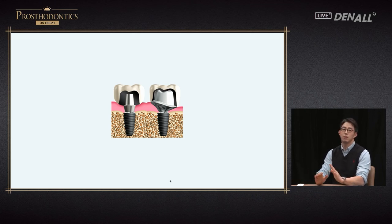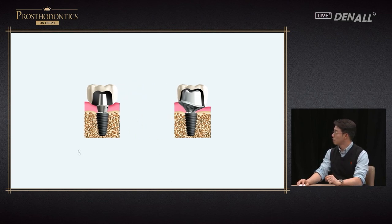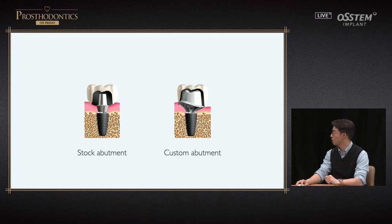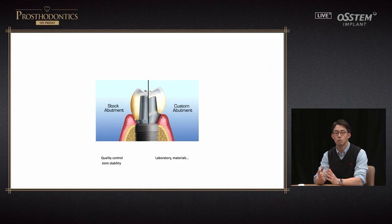You cannot use stock abutment for all cases. If the implant has been placed in a slightly angled way, you can use custom abutment to adjust the inclination. Or if you use stock abutment, the prosthesis margin can be too subgingival and it may be difficult to remove residual cement. In that case, if you use custom abutment, the prosthesis margin can be re-adjusted so that residual cement can be removed easily and the contour adjusted as needed.